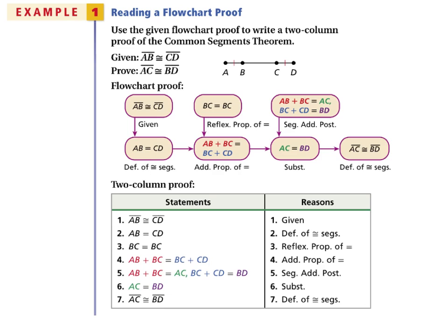Here's our first example. It says use the given flowchart to write a two-column proof of the common segments theorem. Given segment AB is congruent to segment CD, we want to prove that AC is congruent to BD.